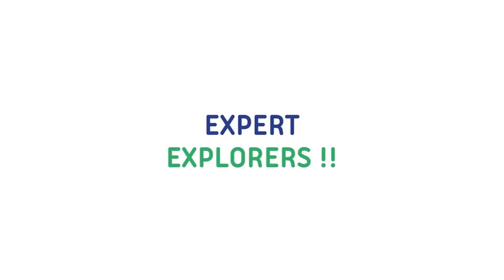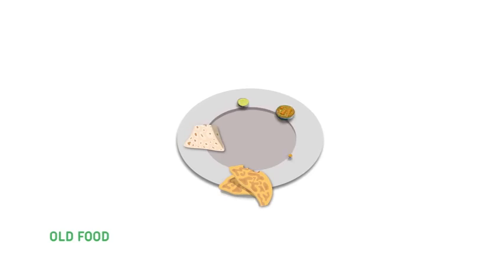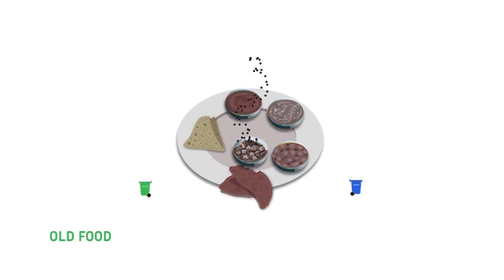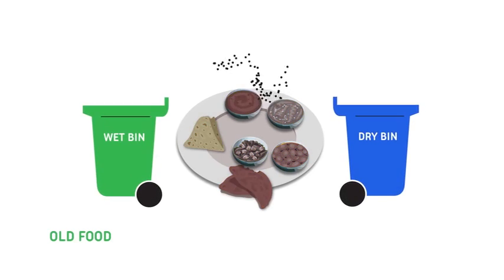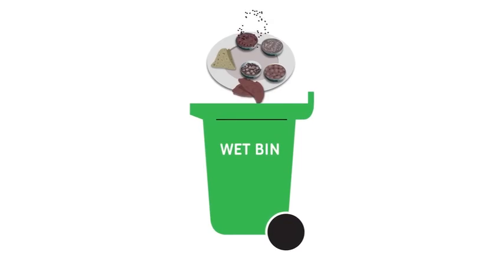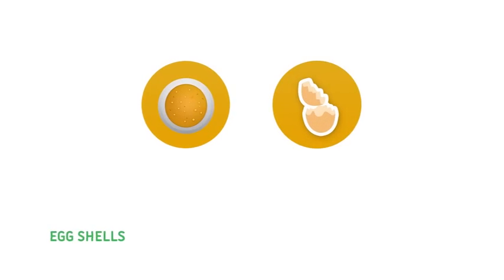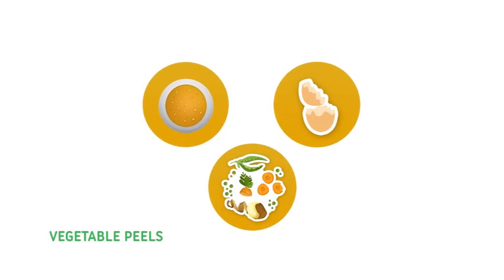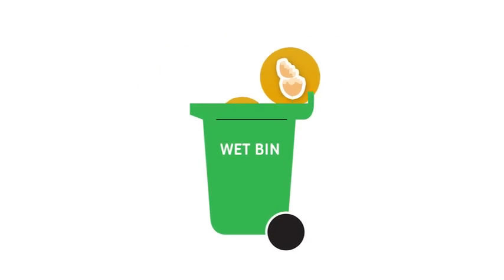Everyone is doing so well. I think you are all becoming expert explorers. Last few ones before we get ready for our next adventure. Old food that has gone bad. Where does it go? Remember, is it natural? Can worms eat it? Wet bin. Old and spoiled food, such as dal, egg shells, vegetable peels, can all be thrown into your wet bin.